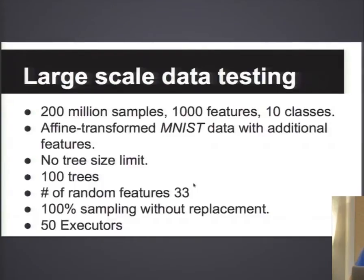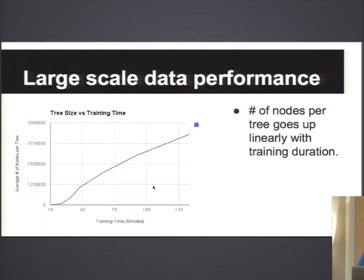What we really want to do is train on potentially billions of samples, but unfortunately we didn't have the budget or time to use more machines in the Amazon cluster. So we could only do 200 million samples with 1,000 features, generated by doing the same affine transformations on the MNIST dataset — rotate, scale, shear, and so on. No size limit on trees, 100 trees, 33 random features per node, 100% sampling, 50 executors. Individual trees can reach around 4 million nodes — these are really humongous trees — and we're training 100 trees at the same time. We can actually train crazy large trees now using Spark, which previously wasn't possible.